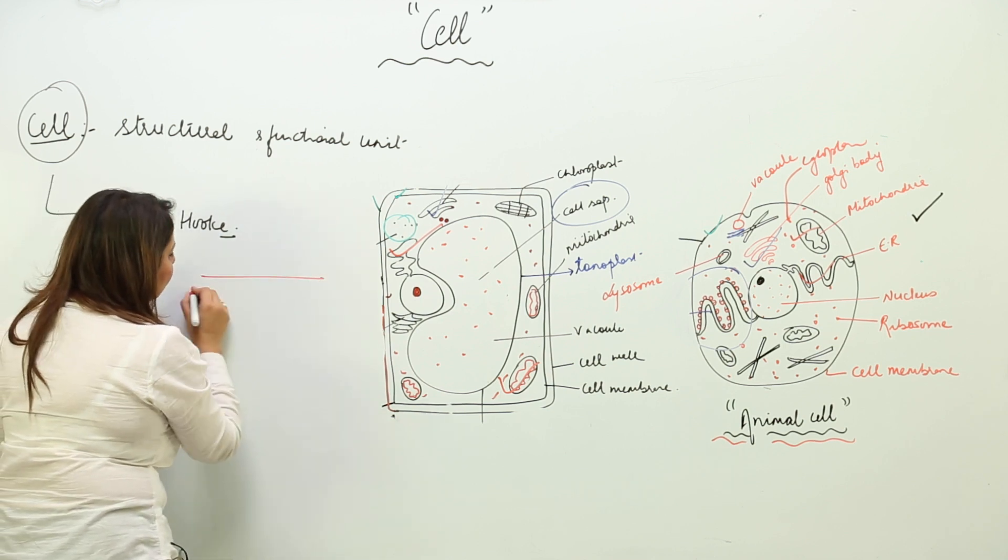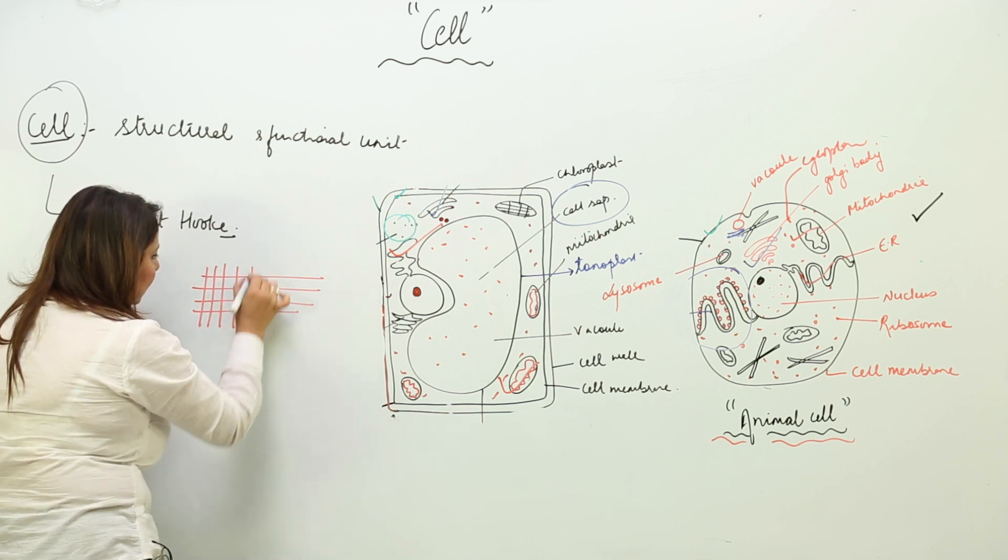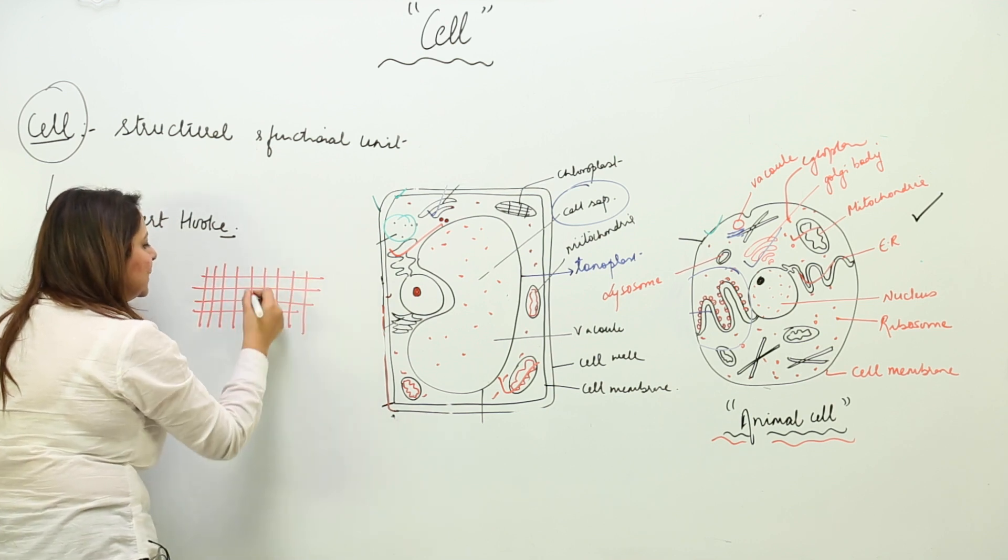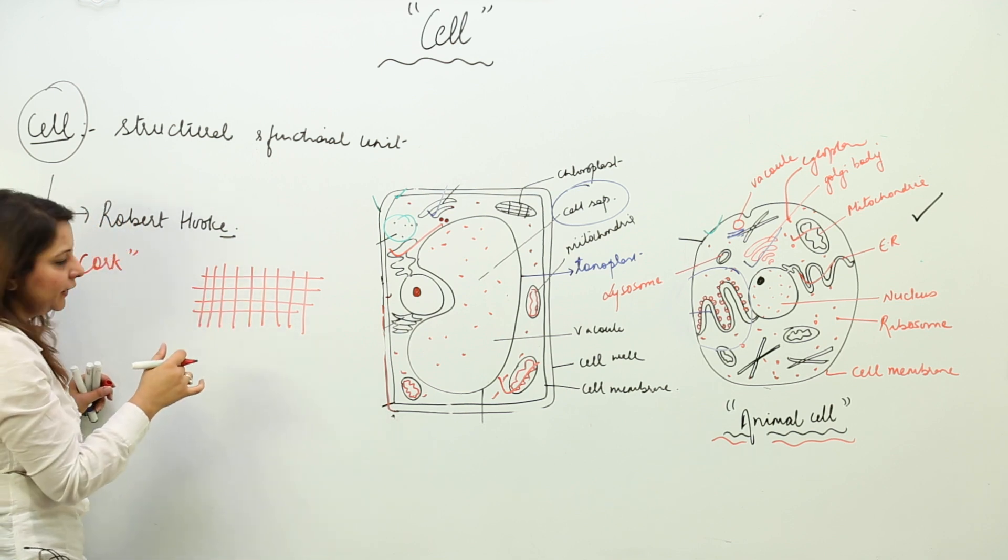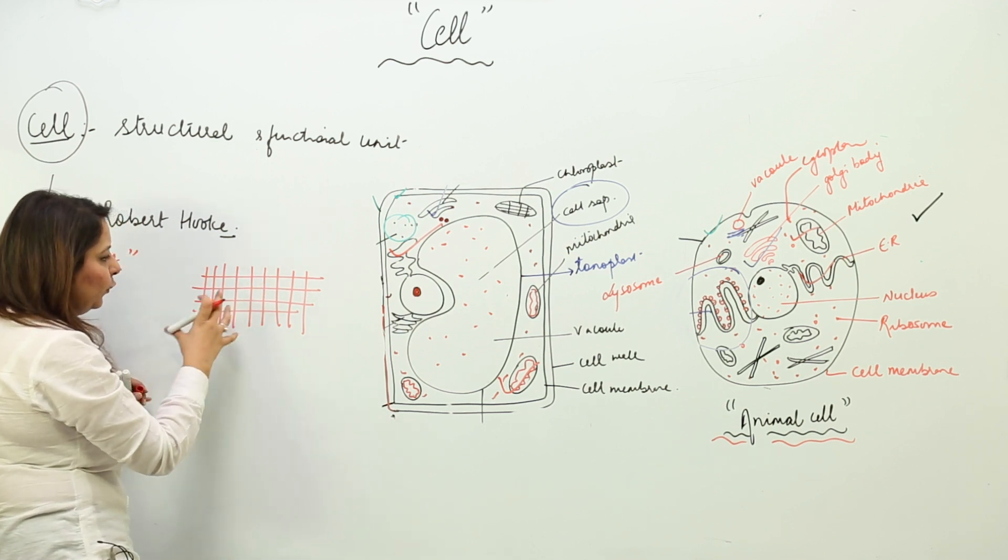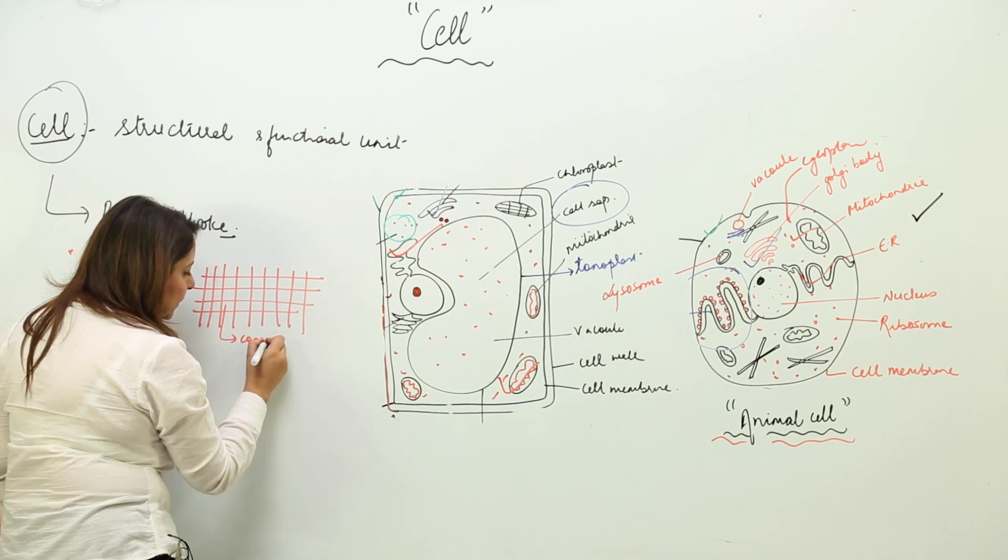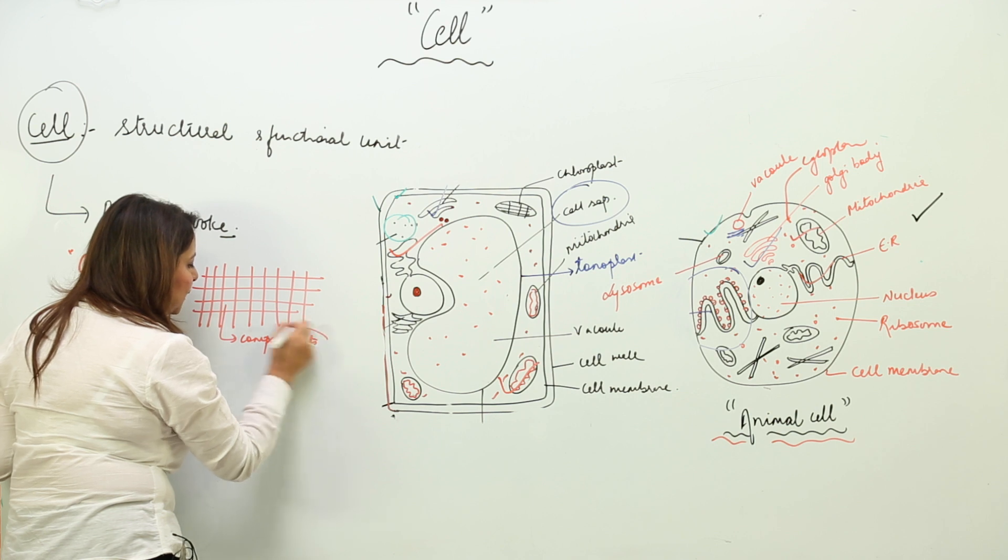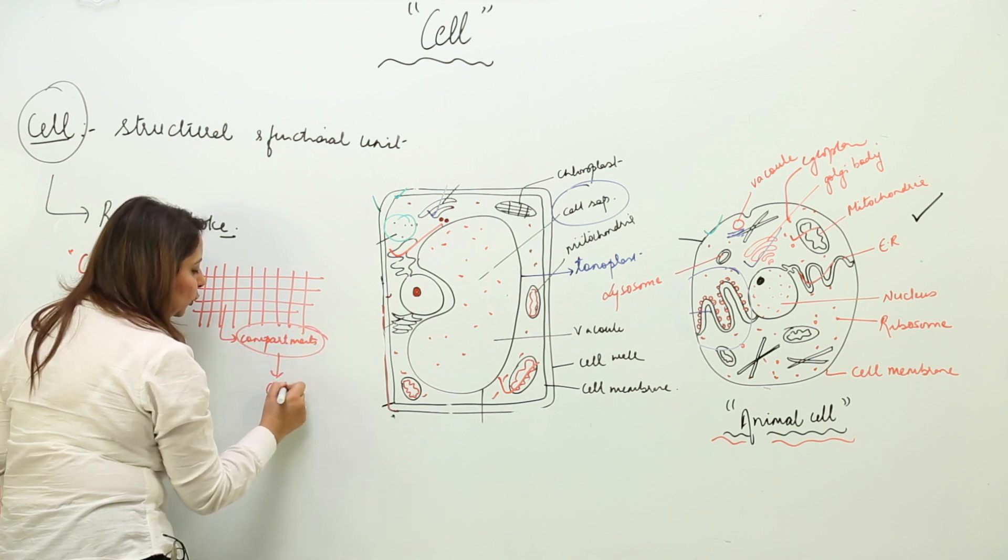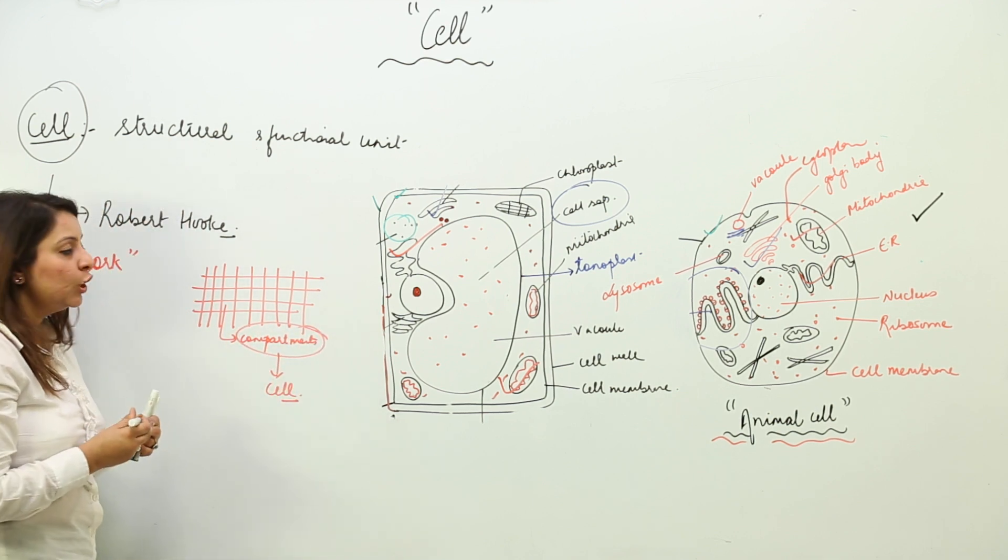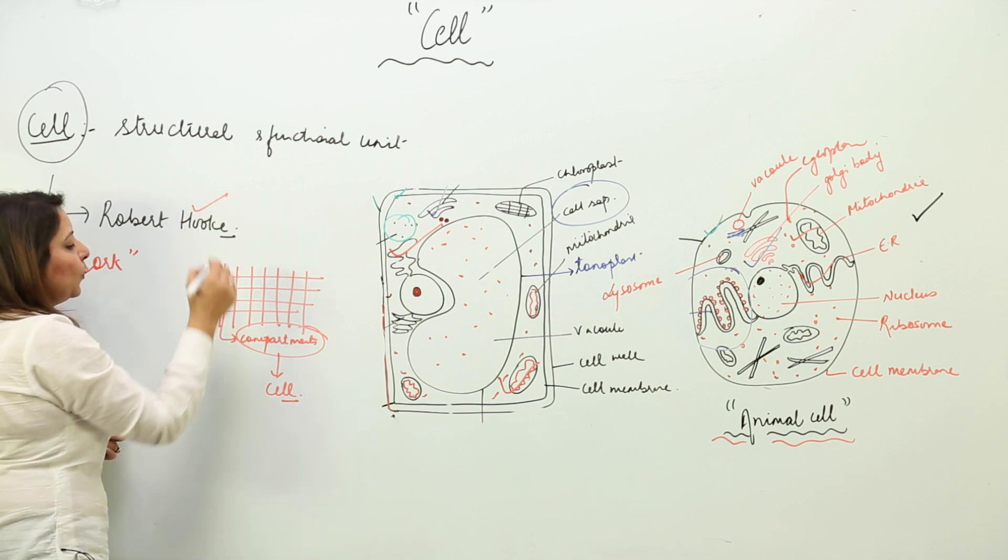It appeared to contain a structure like this. So he called these spaces—there were certain spaces between the walls. Those spaces were called as compartments, which were later replaced by a term called as cell.